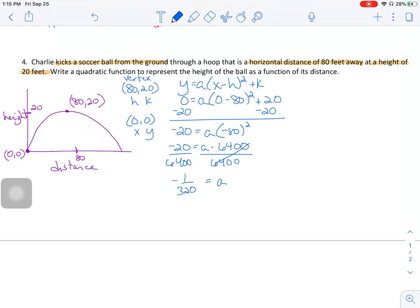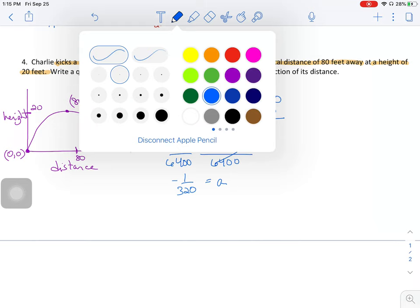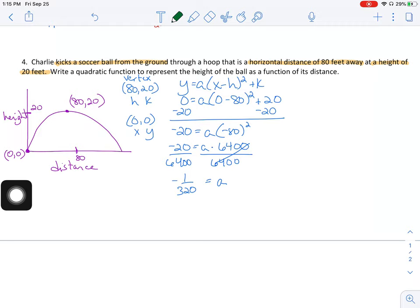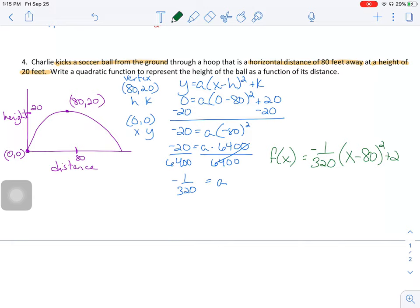Leave it as a fraction unless the directions explicitly say to put it in decimal form. So we now have our A value and we know our vertex. So I can write a function here to represent the whole path of the soccer ball. So F of X is equal to negative 1 over 320 times X minus 80 squared plus 20. So with the word problems, make sure that you read it and annotate it. From what you've annotated, draw a picture that makes sense for the information, then use that picture to figure out what your vertex is, what your point is, or if there's other information that's given to you.